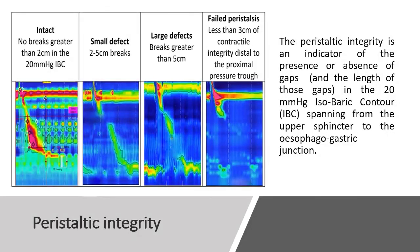The peristaltic integrity is an indicator of the presence or absence of gaps and the length of those gaps in the 20 mm isobaric contour spanning from the upper sphincter to the esophagogastric junction.